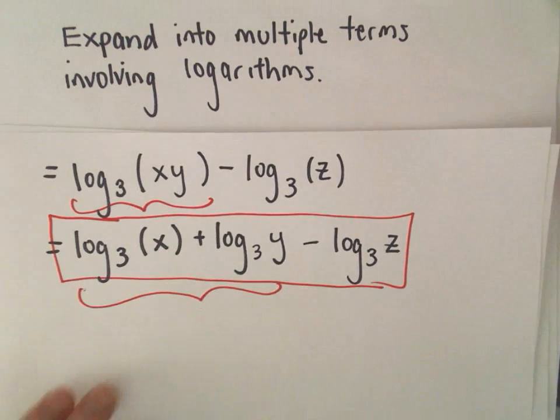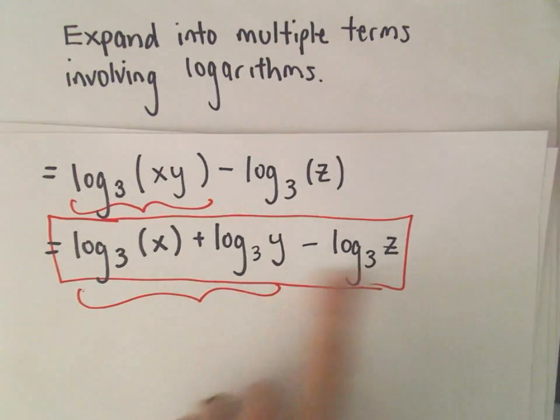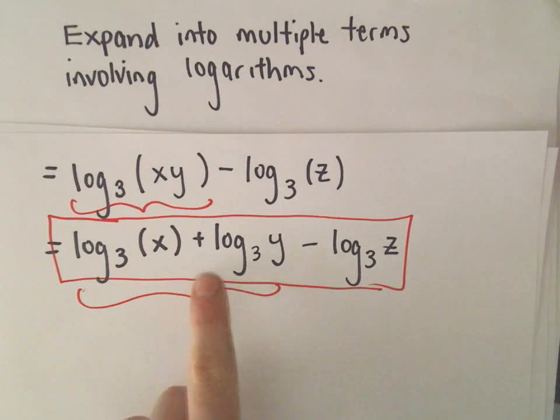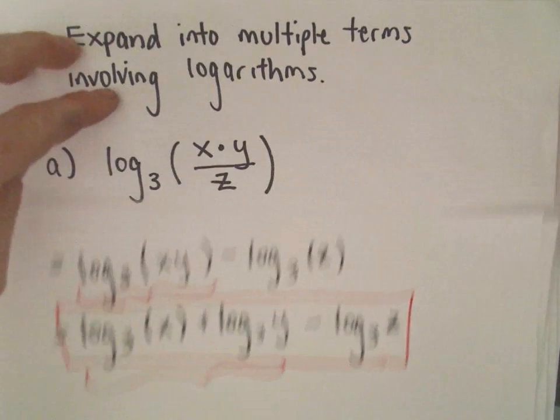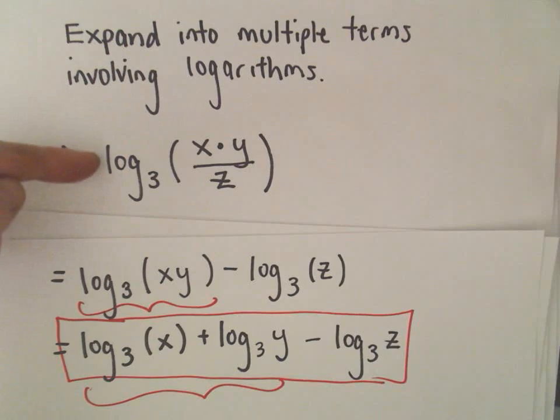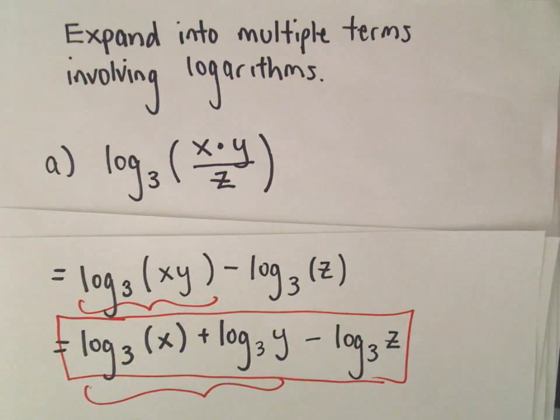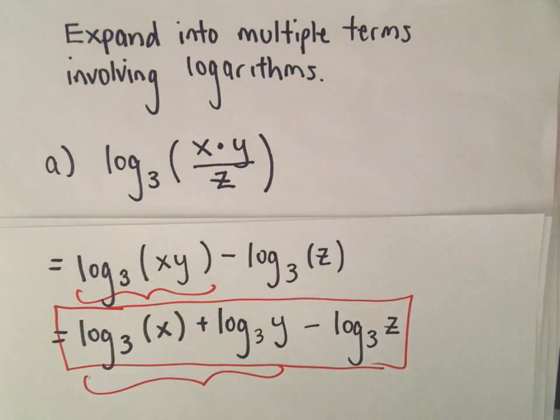If you wanted to combine these into a single logarithm - suppose the problem said combine into a single logarithm - I would just go back and use a property to write it just like we had in part A. I'll do part B in a separate video.